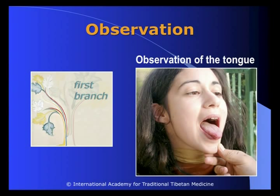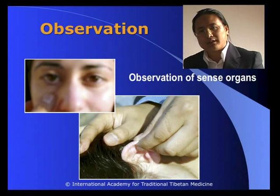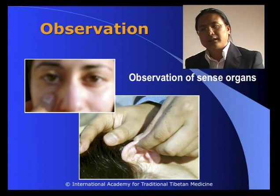When we observe the sense organs, it's important to remember the basic philosophy of Tibetan medicine called Denjal Tawa — the point of view of interdependence. When we are observing the sense organs, we are not only checking the conditions or problems of the sense organs; we try to understand what the internal organ conditions are. For instance, we check the eyes to understand the liver condition, and the ears to see the kidney conditions.